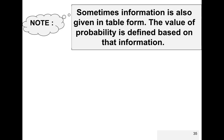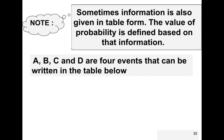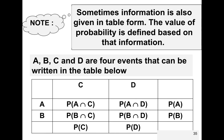Sometimes information is given in table form, and probability values are defined based on that table. For example, if A, B, C, and D are four events arranged in a table, you can read off probabilities such as P(A∩C), the marginal probability of C, the probability of A, and the probability of B directly from the table.